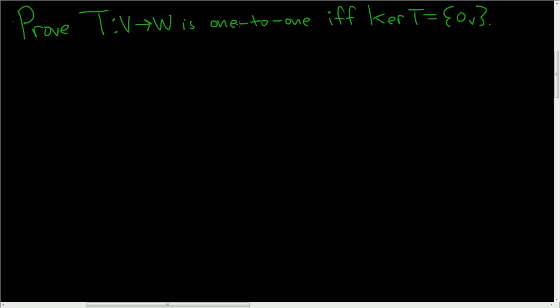Okay, so here's the setup. We have T. T is a linear transformation. We have V and W, these are vector spaces over some field which we'll call capital F. So we're going to show that every single linear transformation is one-to-one if the kernel is equal to the set containing the zero vector.